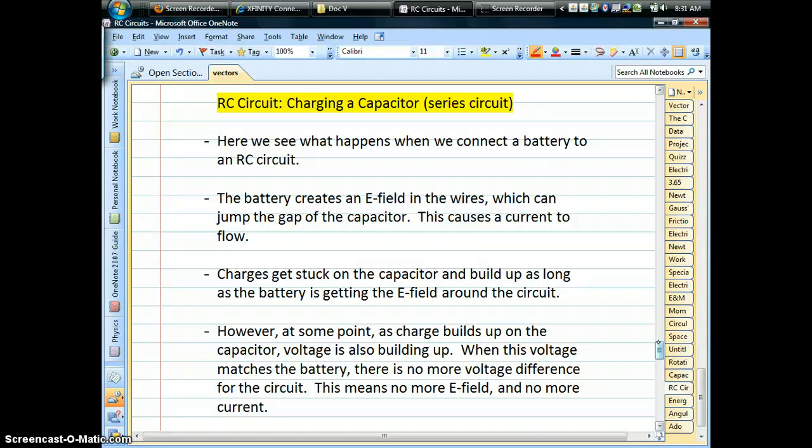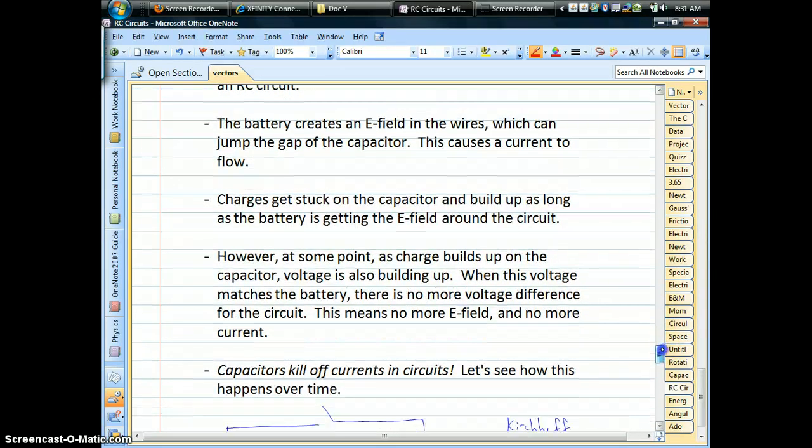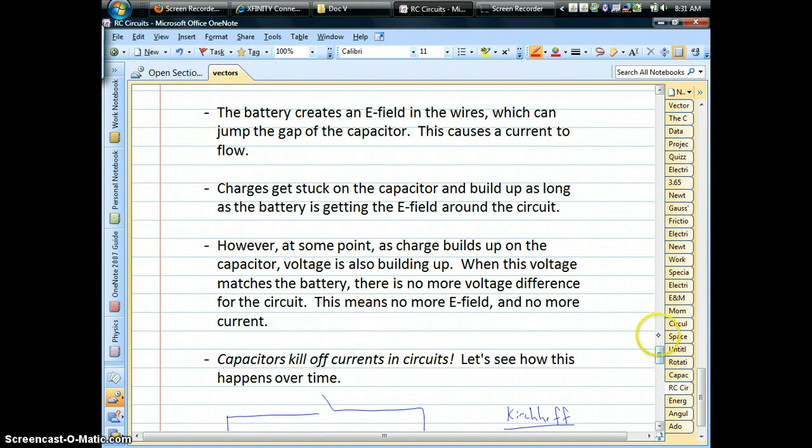To review what happens when you connect the battery, the battery has voltage difference, and when you have voltage difference, you can also create an electric field. Electric field then whips through the wires, and it's the field that jumps the gap for capacitors. You don't have any current going through the gap in plates, or spheres, or cylinders. And so charges build up, and it takes time for charge to build up.